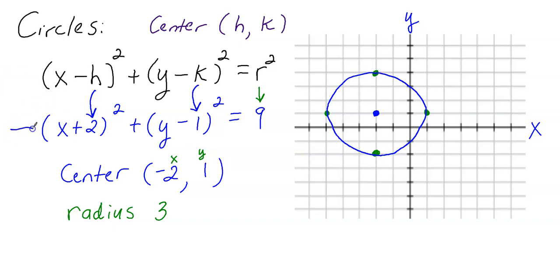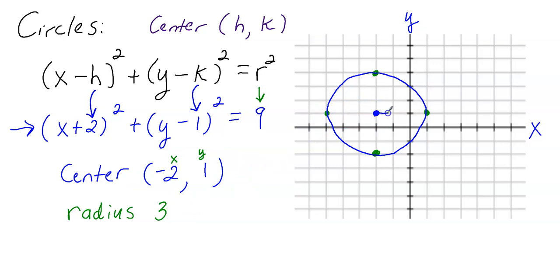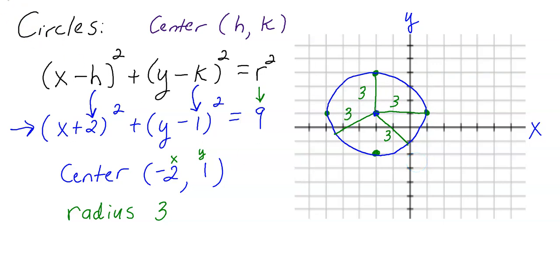The graph of this equation — x plus 2 squared plus y minus 1 squared equals 9 — is this circle. The center is right here at negative 2, 1, and the radius is 3. The distance from the center to any point on the edge will be 3 units. I hope you found this really helpful. Have a great day.